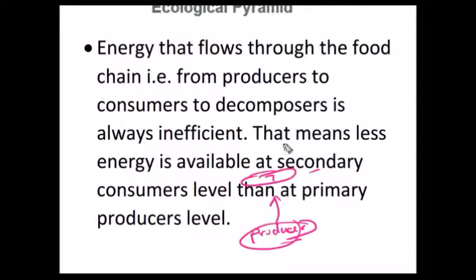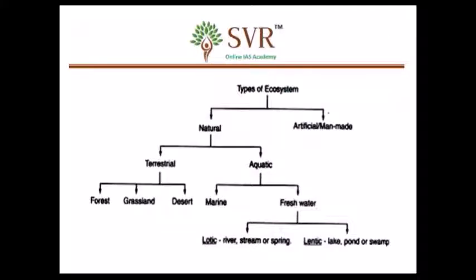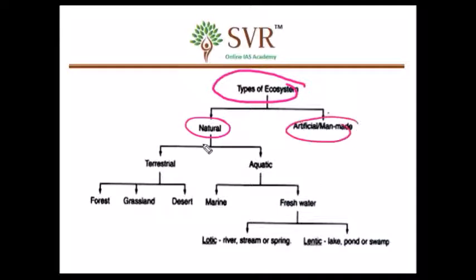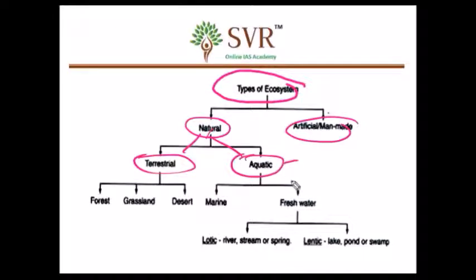Beyond the tertiary consumer level, the food chain cannot progress because of the lack of sufficient energy. Now let's discuss about various types of ecosystems. It can be natural or man-made. Within natural, we can classify the ecosystem into two broad categories: one is terrestrial and the second one is aquatic ecosystem.